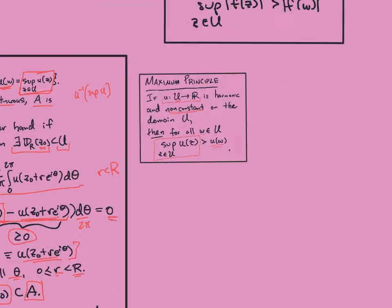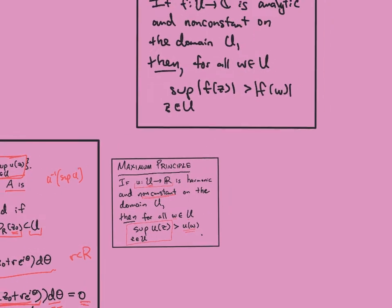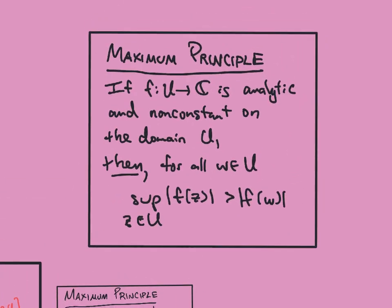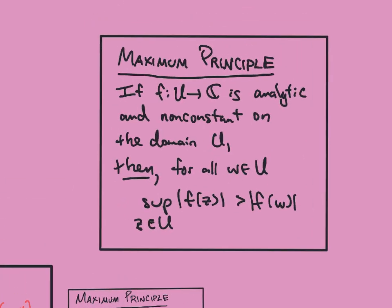So this is the maximum principle for harmonic functions. There's also a maximum principle for analytic functions, which I'll leave as an exercise. It's using the modulus of the analytic function. And so you have to think of a way to play around with this to use the maximum principle for harmonic functions to prove it. And there are other ways to prove it too. But if I have f analytic and non-constant on a domain U, then the supremum of the modulus of f is always greater than the modulus at any specific point.